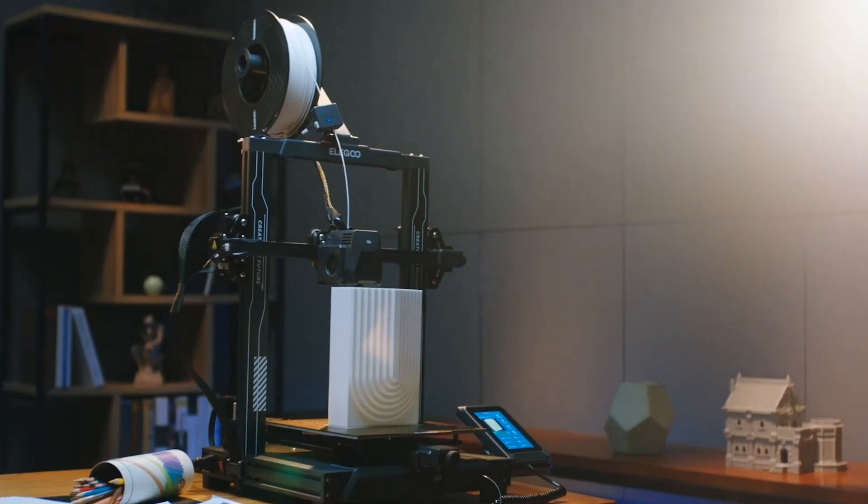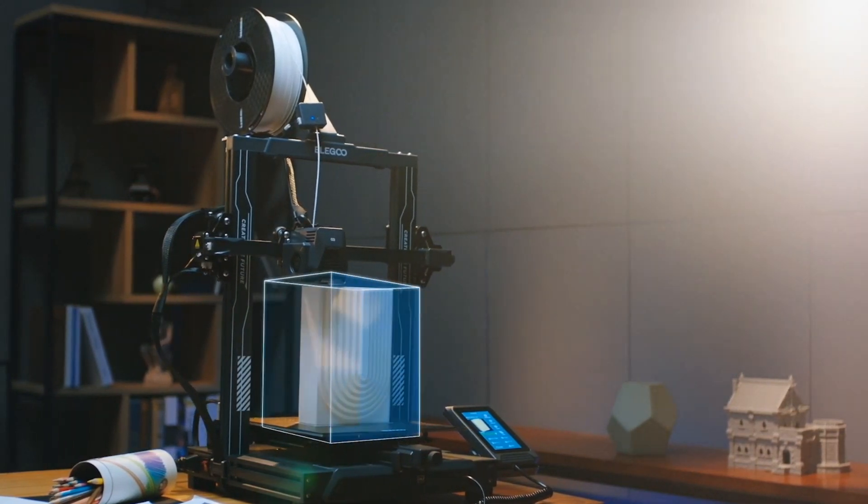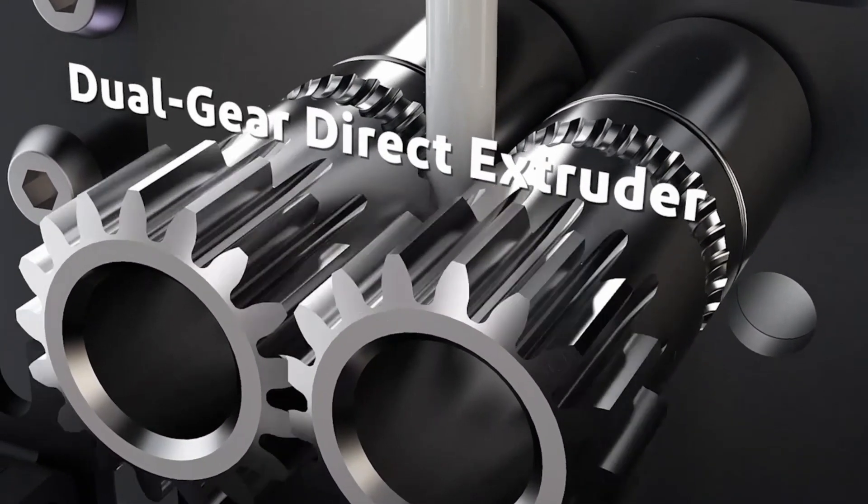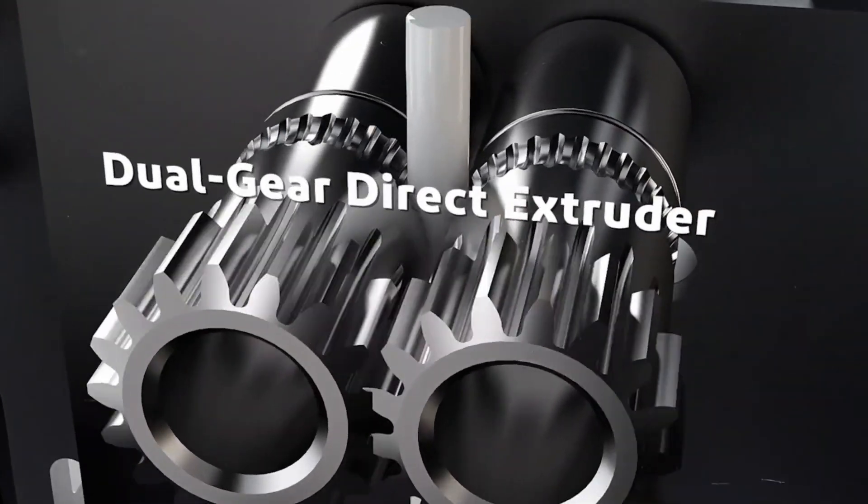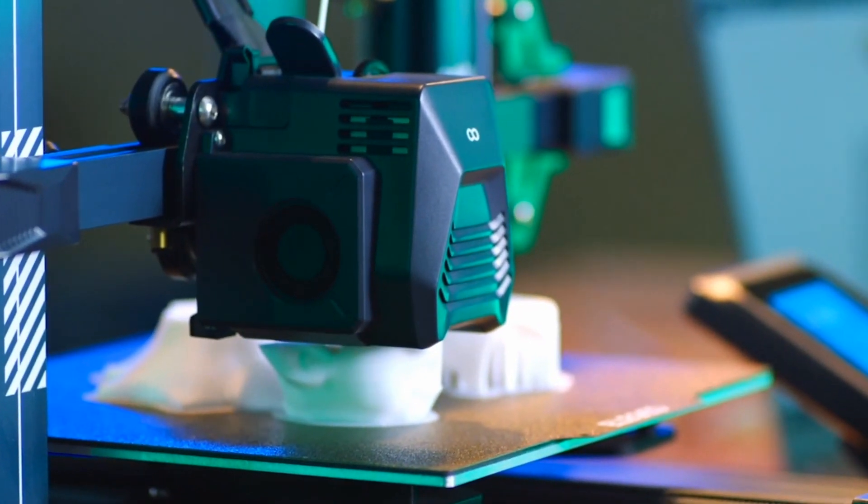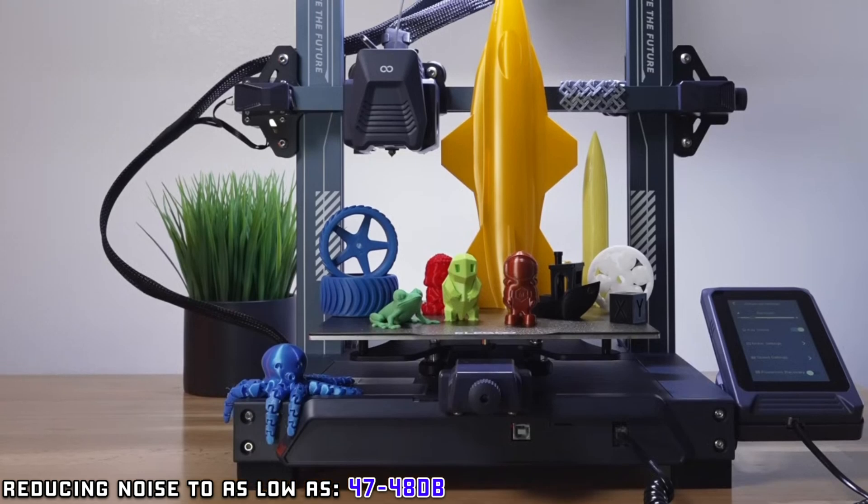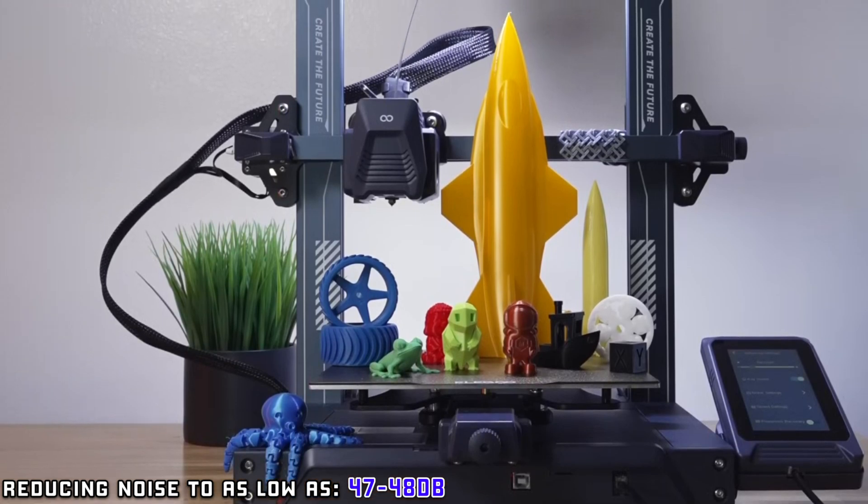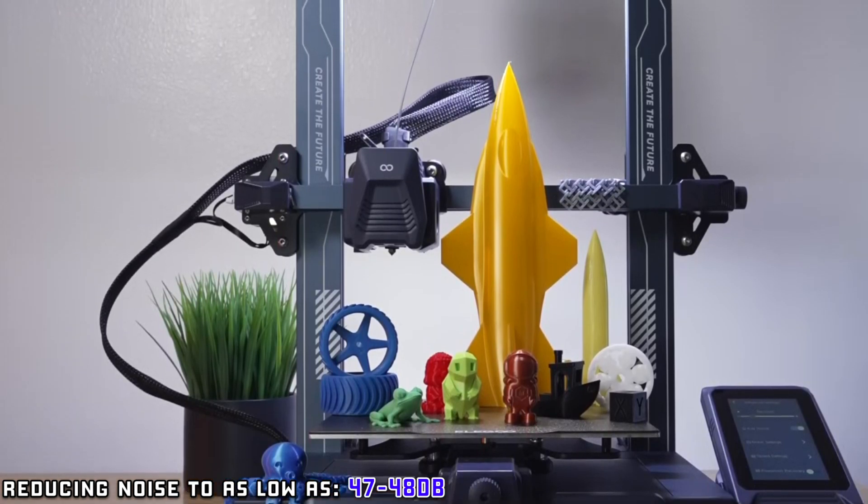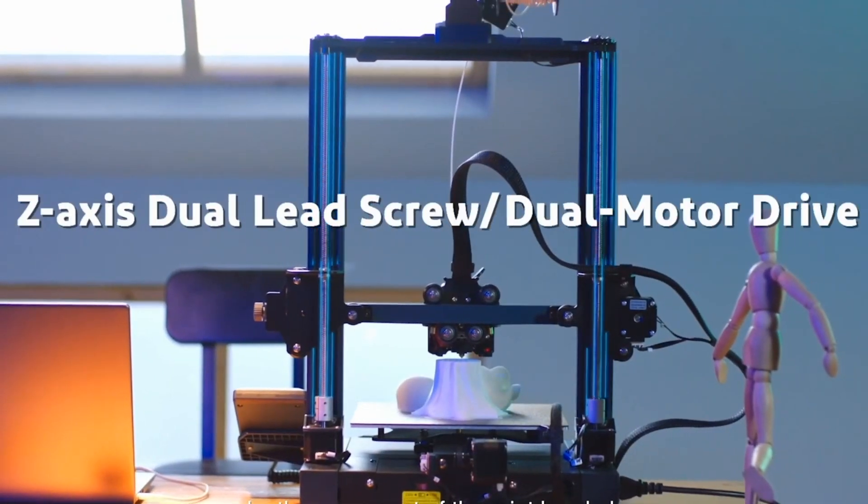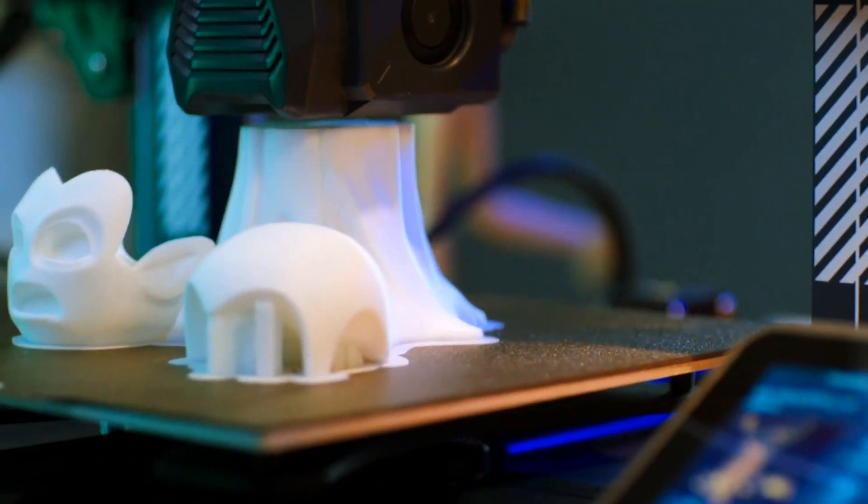It comes equipped with an STM32 motherboard, silent stepper motors, and a dual-gear direct drive extruder made of high-quality SUS303 stainless steel. This setup ensures quieter, more precise printing, reducing noise to as low as 47-48 dB. The new dual-gear direct drive extruder provides smoother filament feeding, reducing nozzle clogging and under-extrusion issues.